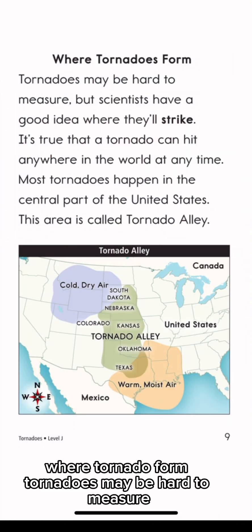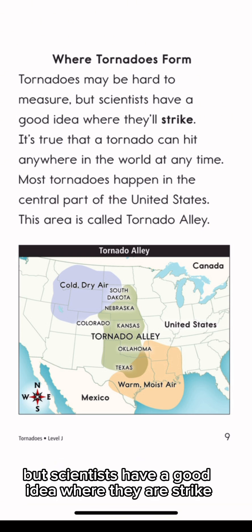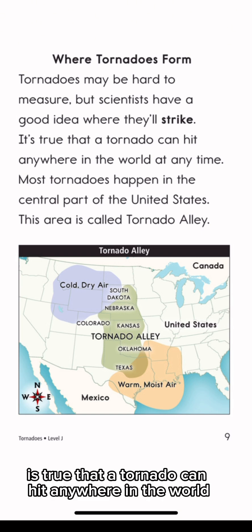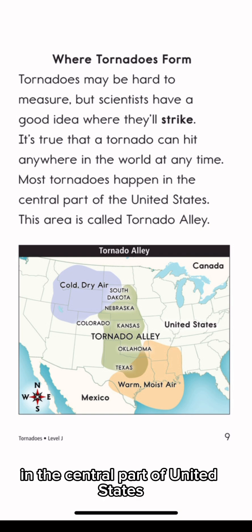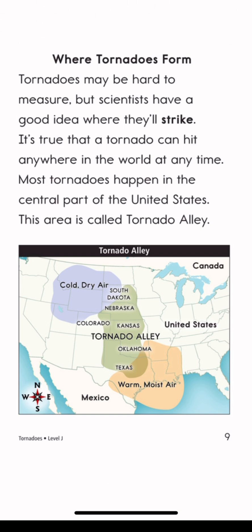Where tornadoes form. Tornadoes may be hard to measure, but scientists have a good idea where they strike. It's true that a tornado can hit anywhere in the world at any time. Most tornadoes happen in the central part of the United States. The area is called Tornado Alley.